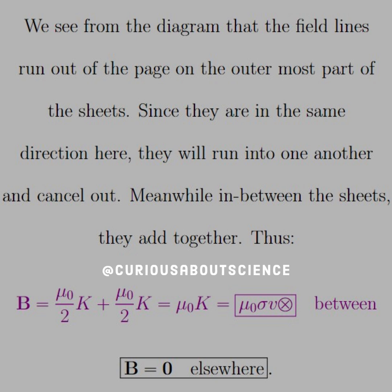and we can see that adding those together gives us mu naught K, but what is K but sigma times the velocity, because that's the current over the area. So we're left with mu naught sigma v going into the page in between, which is what we saw, and 0 otherwise.